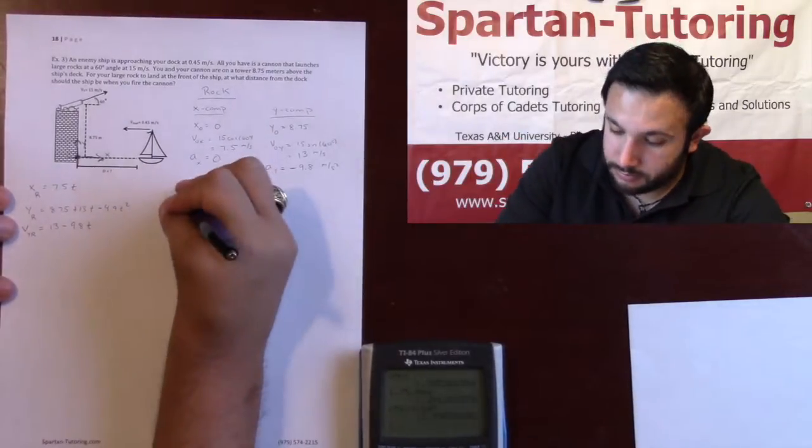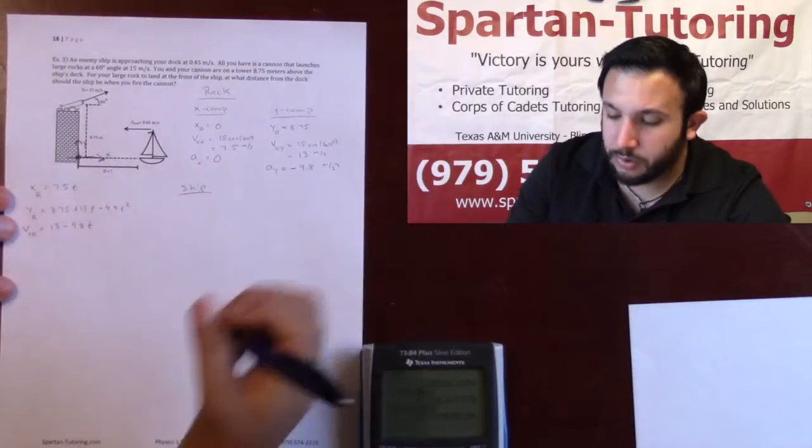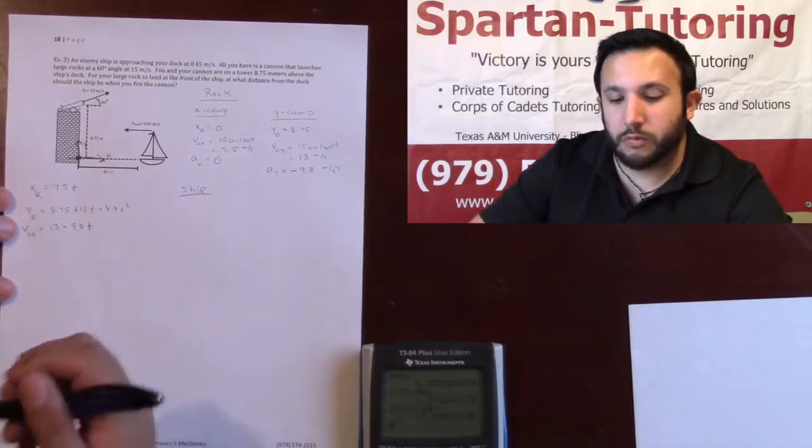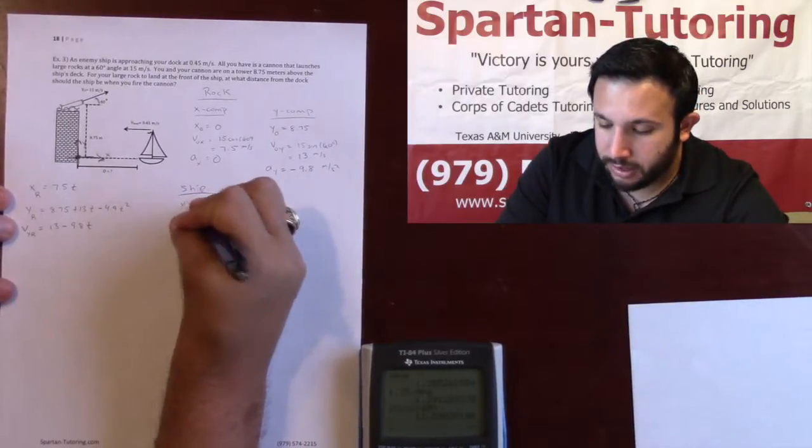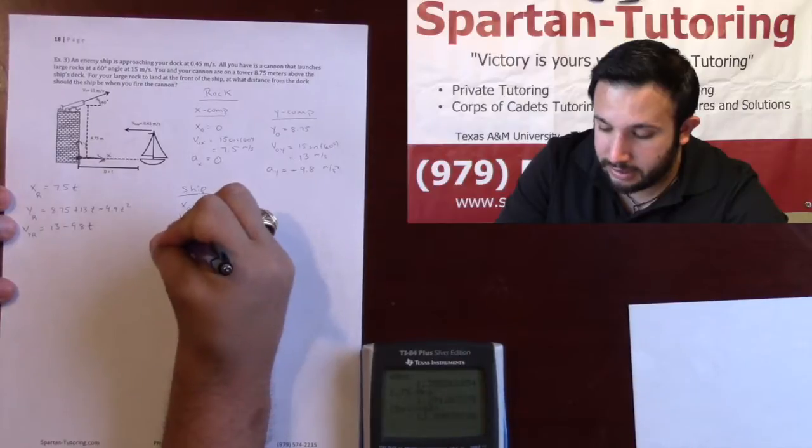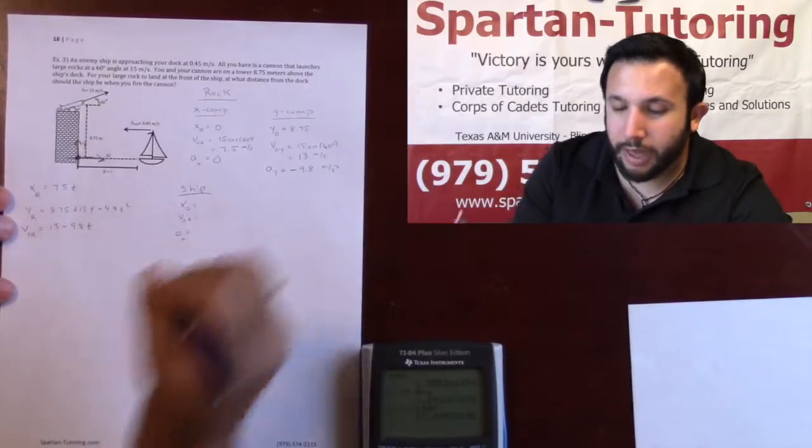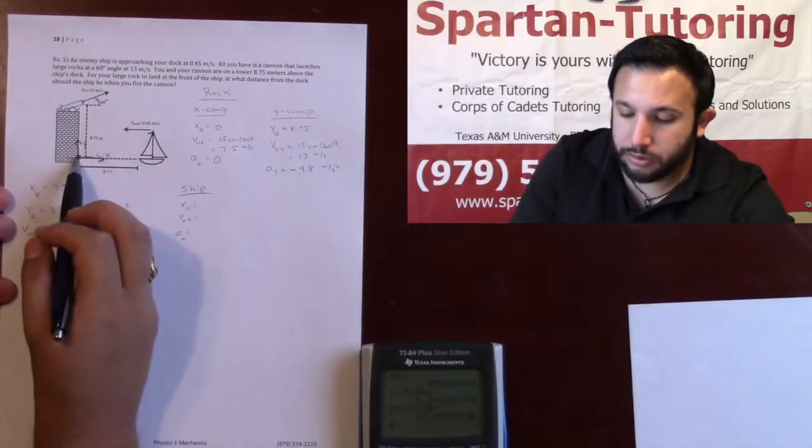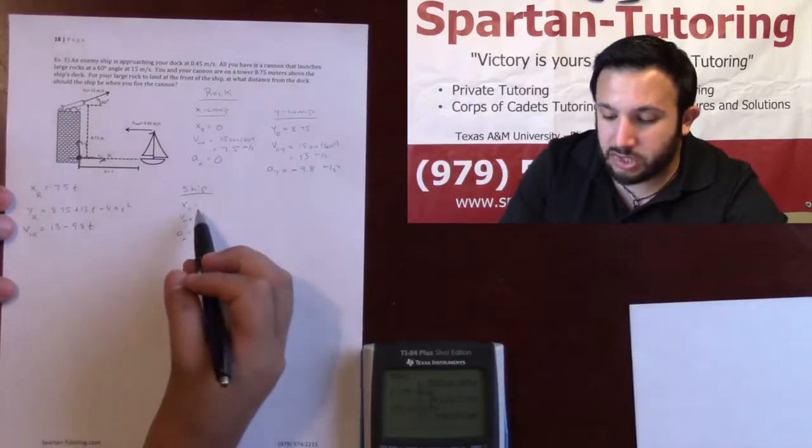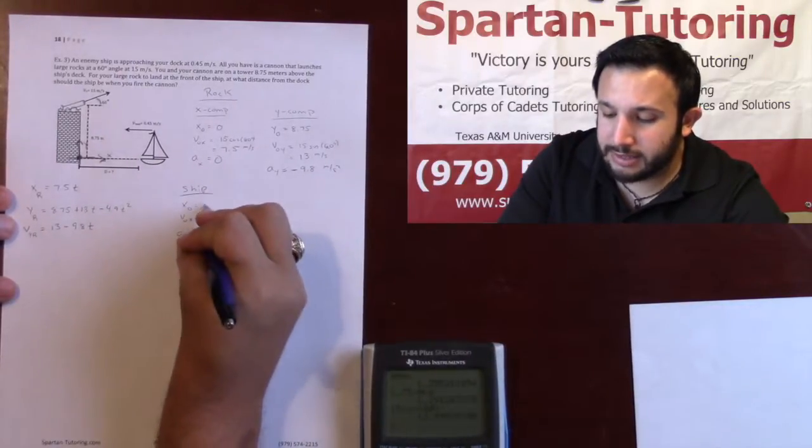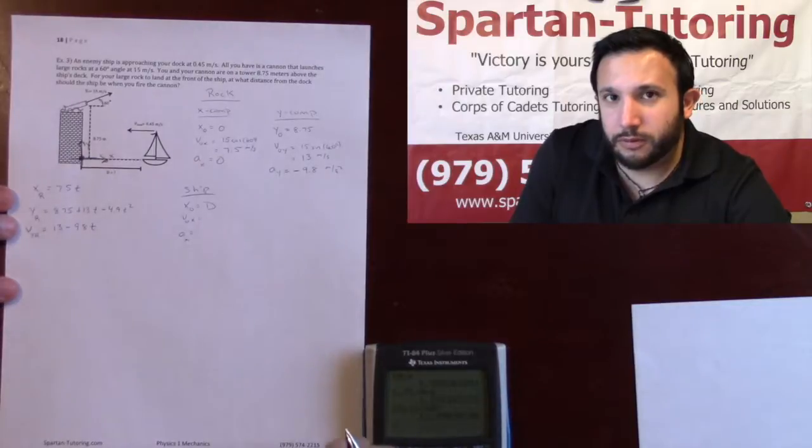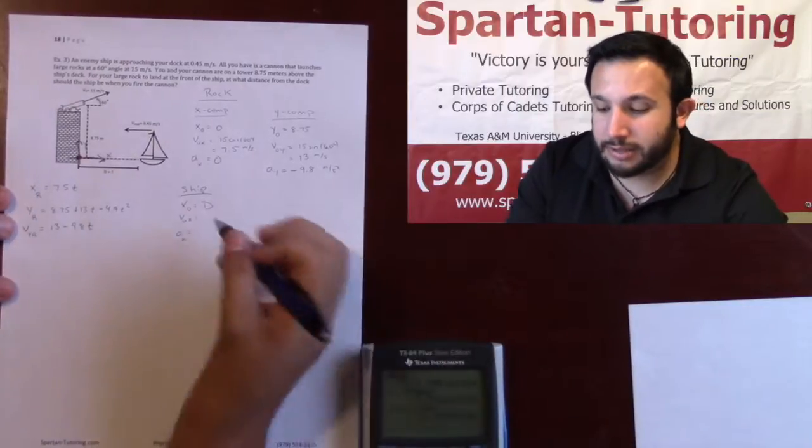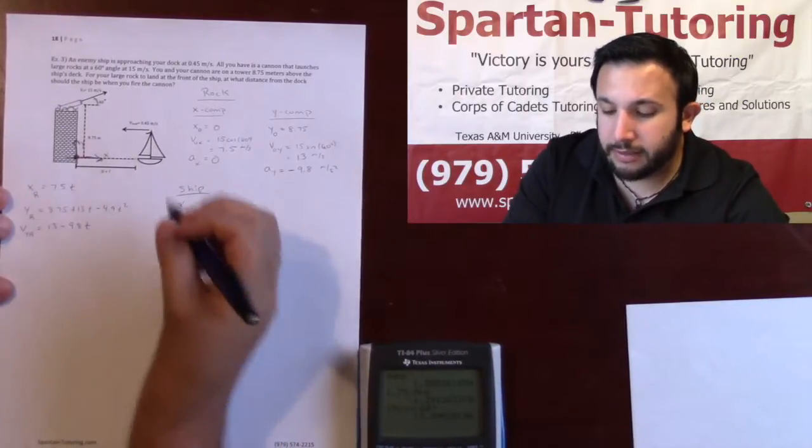We got our equations for the rock. That's not the only thing in motion—I got a ship that's in motion as well. But what's cool about the ship is, well, it's only moving in the x direction. So x_0, v_0 in the x, and a—remember everything is revolved around how you set up your axis. Here is my origin, positive x is to the right, and so x_0 is actually that distance d that I'm looking for.